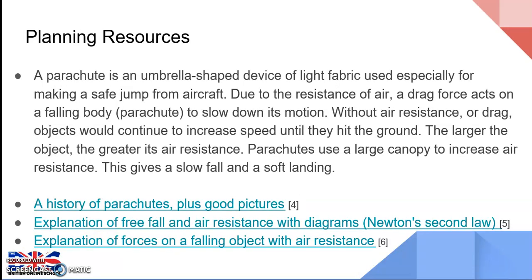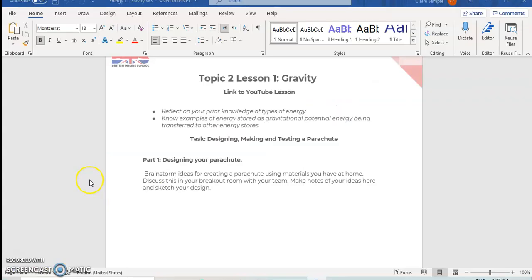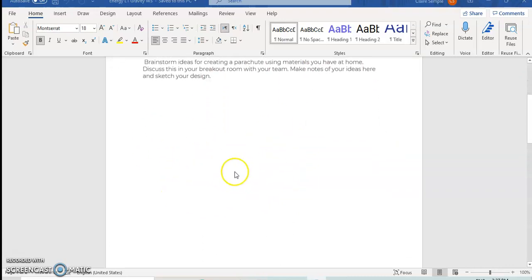The first part of today's task is to go into your breakout rooms in your usual science lab groups. You're going to research and brainstorm what features your ideal parachute would have, using the links added into the lesson PowerPoint. Work together, share your ideas, make notes, and sketch your design before construction begins. This should be completed on your worksheet — you can even sketch on paper and upload a photo.